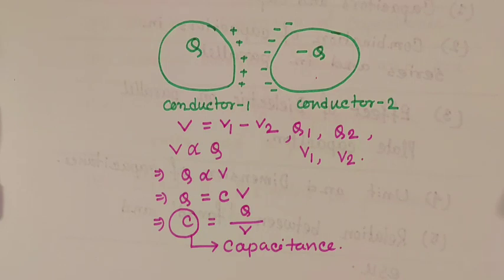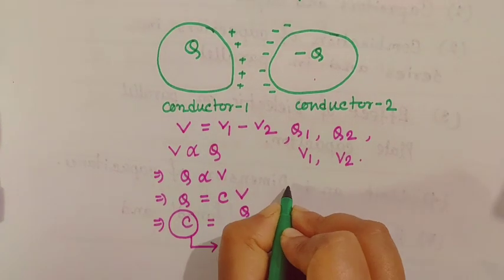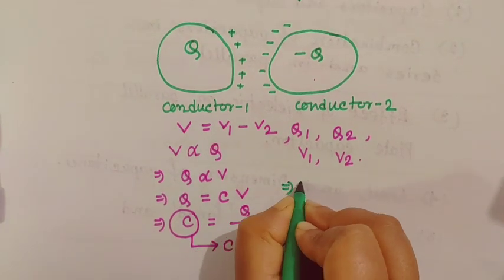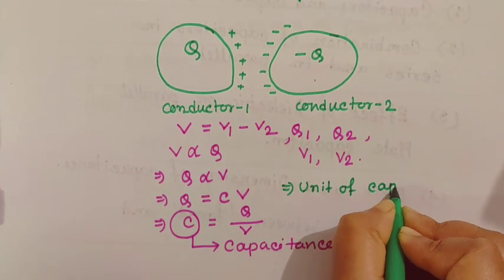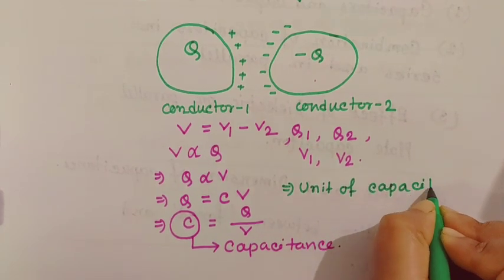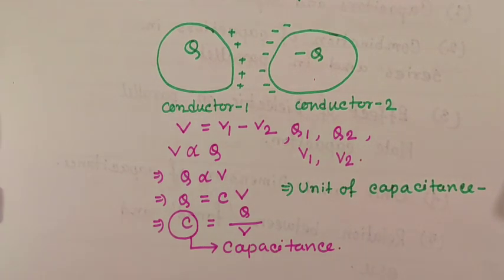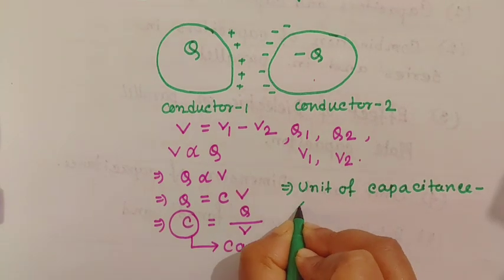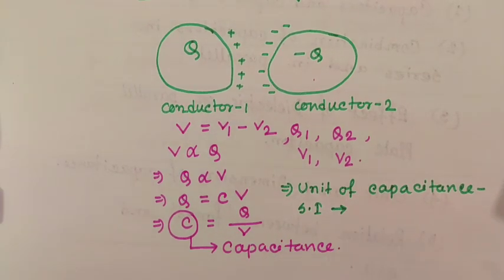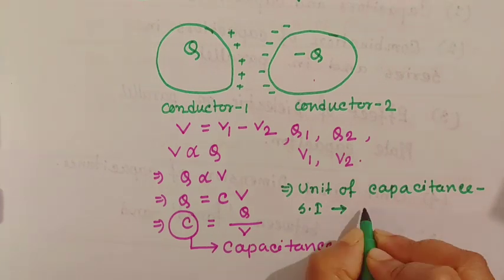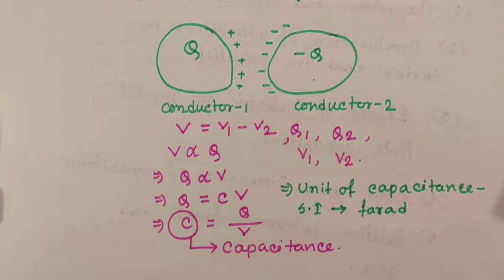Next topic is unit of capacitance and also dimension. SI unit of capacitance is Farad. And CGS unit of capacitance is ESU — electrostatic unit.